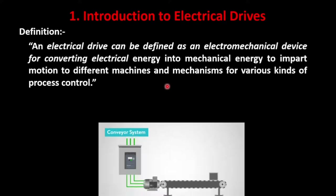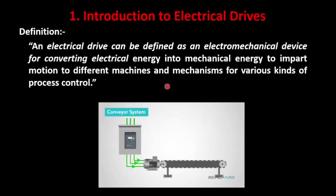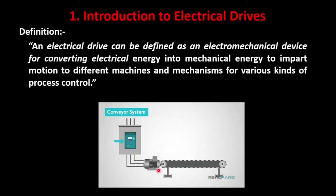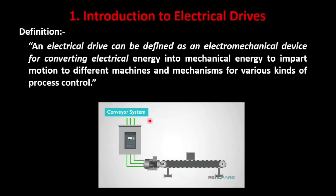Let us understand this with an example — a conveyor system. Here the motor is controlled by a control system, which could be a PLC or any other system. The motor takes electrical energy and converts it into mechanical energy to impart motion to the conveyor belt, which carries goods from one end to another. The entire system — the control element, the motor, and the conveyor belt — is known as a drive.